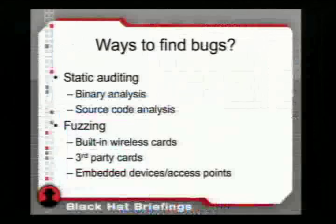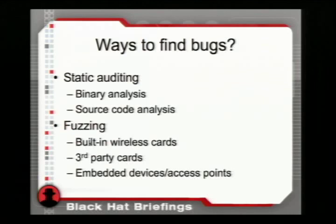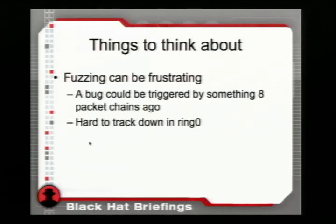Now, ways to find bugs: static auditing, binary analysis, and source code analysis. Most people don't have access to source code, so when stuck reverse engineering device drivers, it's useful to grab an open source version for clues. And fuzzing — that's how we found most of this. We were looking at built-in wireless cards, add-in PCI cards, embedded devices, and access points. Fuzzing can be frustrating: a bug can be triggered by something eight packets ago, and tracking crashes in kernel space is hard.